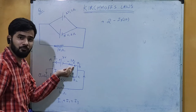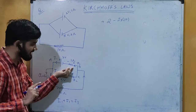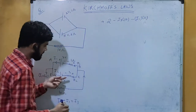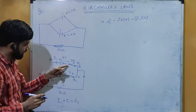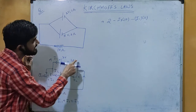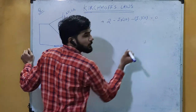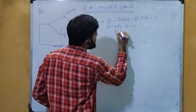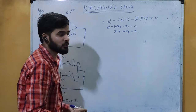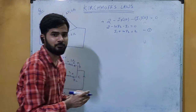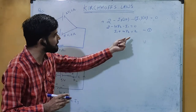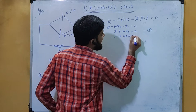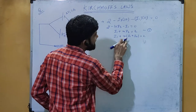Now for the loop, move to the resistance of 1 ohm. The voltage drop is the product of current and resistance: current is i1 and resistance is 1, so we write minus i1 into 1, because we are moving from positive to negative. The loop equation gives: 2 minus 10 i3 minus i1 equals 0, which we can write as i1 plus 10 i3 equals 2. Substituting i3 = i1 + i2, this becomes 11 i1 plus 10 i2 equals 2. This is equation number 2.